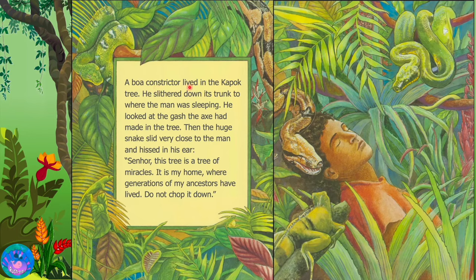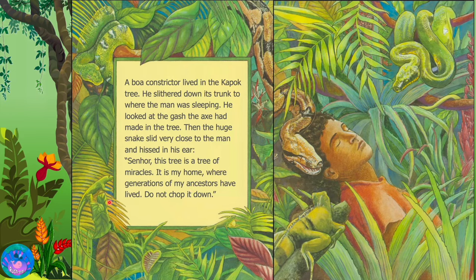A boa constrictor lived in the kapok tree. He slithered down its trunk to where the man was sleeping. He looked at the gash the axe had made in the tree. Then the huge snake slid very close to the man and hissed in his ear: Senor! This tree is a tree of miracles. It is my home where generations of my ancestors have lived. Do not chop it down!